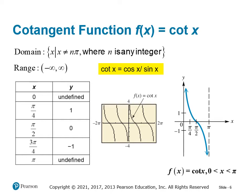Cotangent is the quotient of cosine over sine. Very similarly to tangent, wherever the denominator is zero it's undefined — here the denominator is sine, and sine is zero at 0 and at pi. When sine and cosine are equal at 45 degrees, here at pi over 4 and 3pi over 4 (the pi over 4 reference angle in quadrant 2), cotangent equals 1 and negative 1 respectively.